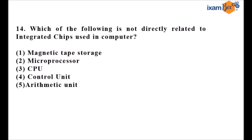Question fourteen asks: which of the following is not directly related to integrated chips (ICs) used in computers? The answer is magnetic tape storage. Both ICs and magnetic tape storage are types of memory used in different generations of computers, but magnetic tape storage came long before ICs and is therefore not directly related to them. Students can find this in the introductory video of the NABARD course.